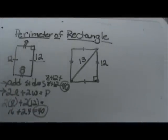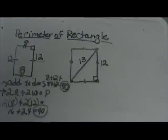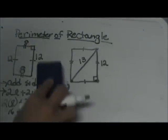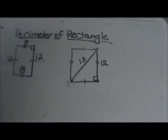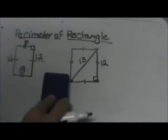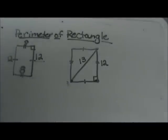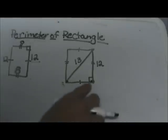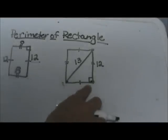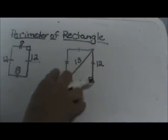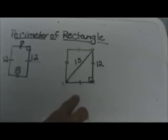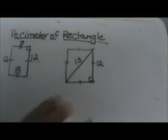Now let's take a special case. What if instead of being given the sides, you are given the diagonal and one side? How would you solve to find the perimeter? Well, we know we have a right angle because it is a rectangle. We know that this side and this side are congruent, and the top and the bottom are congruent. But we don't know this side to add all four sides up.